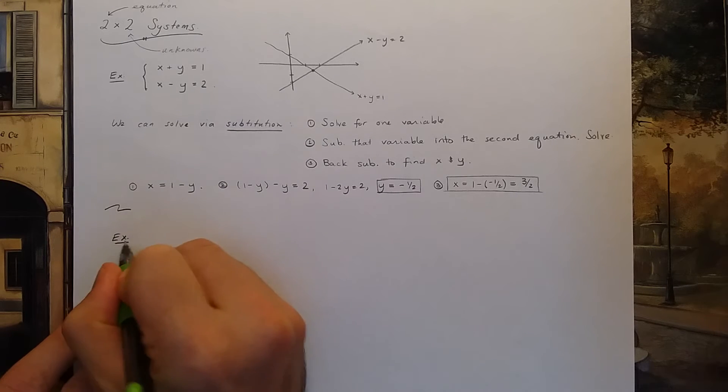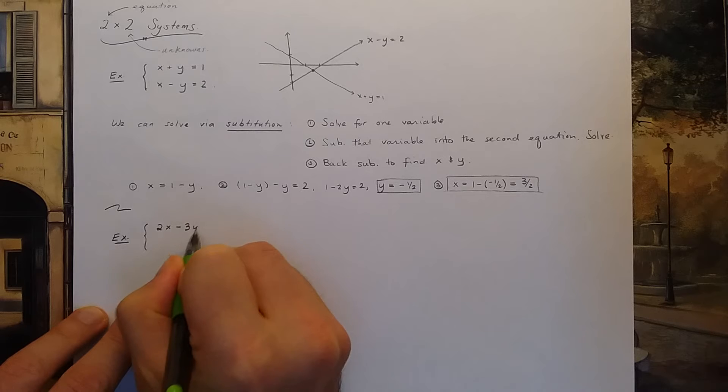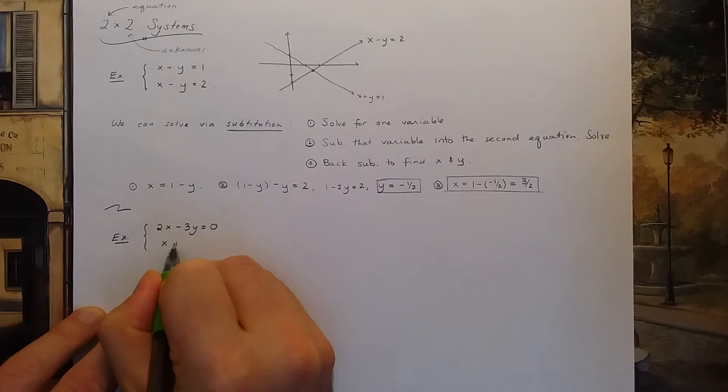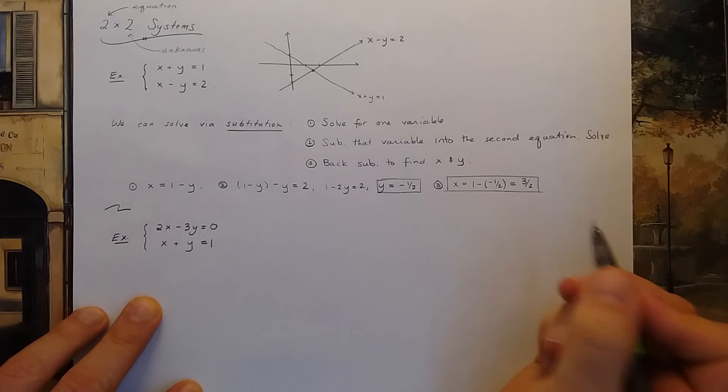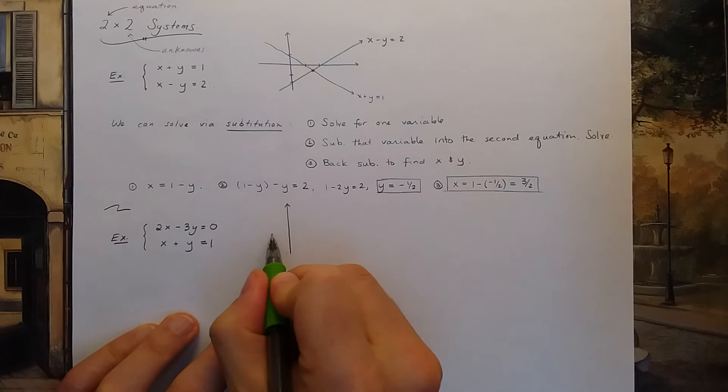There's also a second method that I'd like to illustrate with this example. Let's suppose I have 2x minus 3y is equal to 0, and x plus y equals 1.